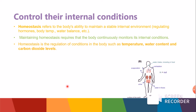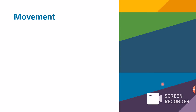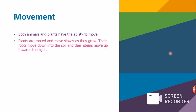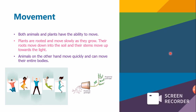Homeostasis is the regulation of conditions in the body such as temperature, water content, and carbon dioxide levels. These must be balanced between the internal and external environment. Regarding movement, both animals and plants have the ability to move. Plants are rooted and move slowly as they grow, for example through phototropism. Their roots move down into the soil through geotropism, and stems move up towards the light. Animals, on the other hand, can move quickly and move their entire body.